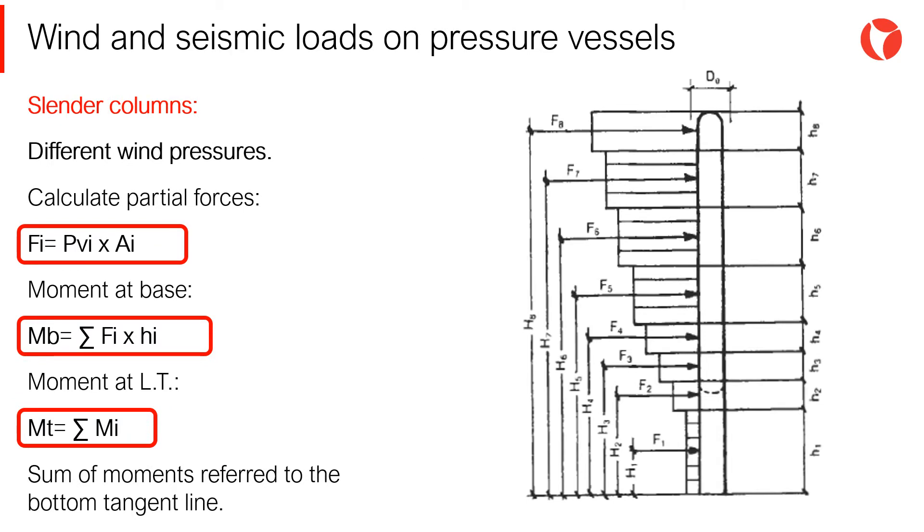For slender columns subjected to different values of wind pressure, the base shear and moments are obtained as the sum of moments of each wind pressure value. The force of each wind pressure threshold is applied at the center of each distributed load.